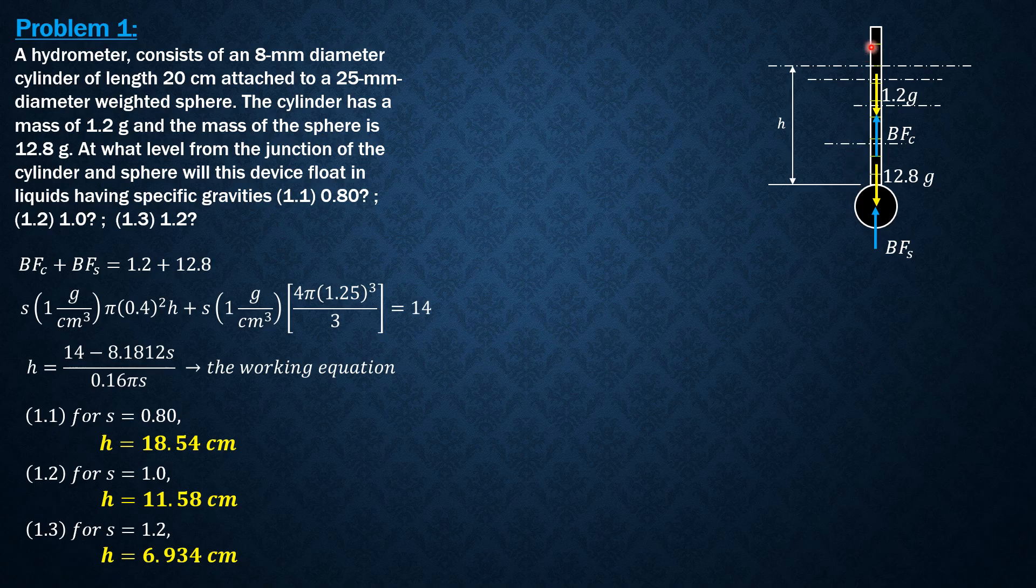So in other words, the graduation for the specific gravity should be from low specific gravity near the top. Then as we go down, the graduation will increase closer to the junction between the stem and the sphere. So that's all for this problem.